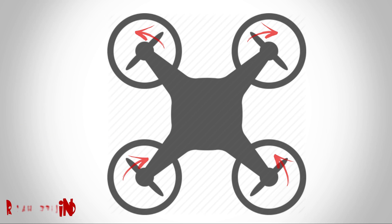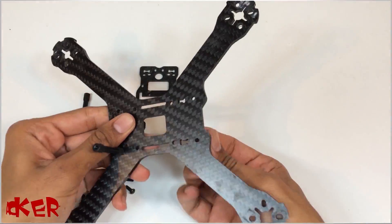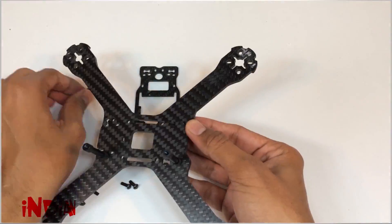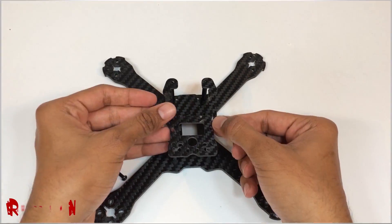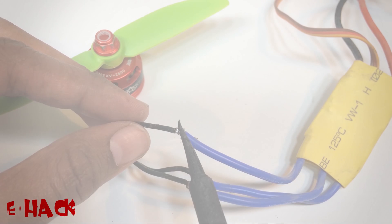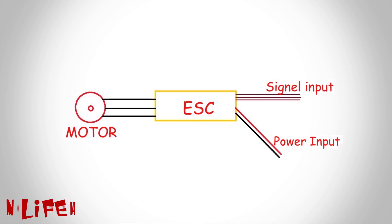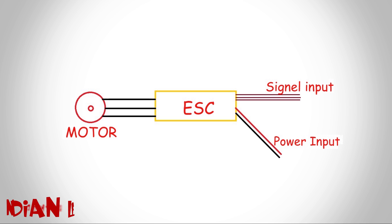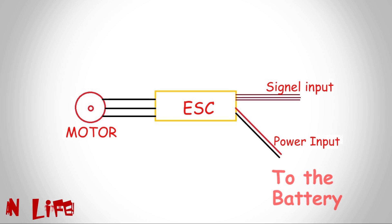All four motors are placed on the frame and the motors are connected with ESCs. The ESC has two inputs — one for signal and another for power. The ESC gives power to the motor according to the signal sent, and the power input is connected with the battery through the distribution panel.